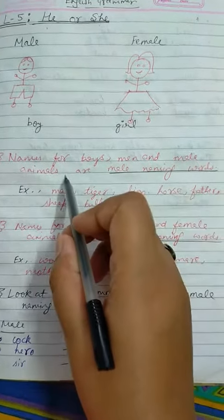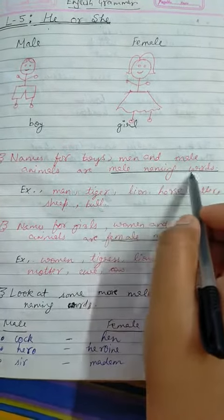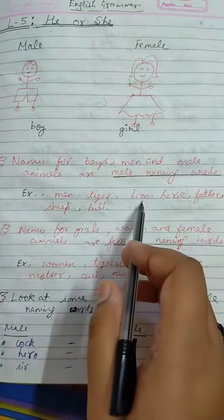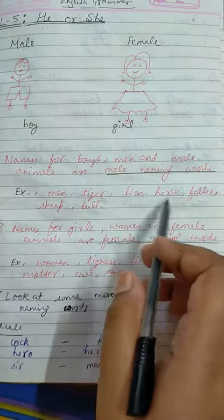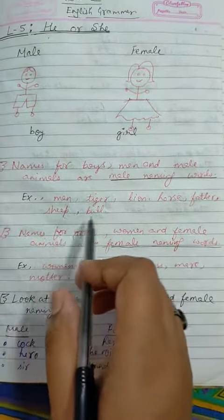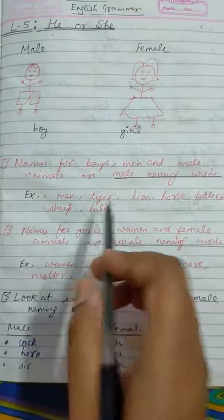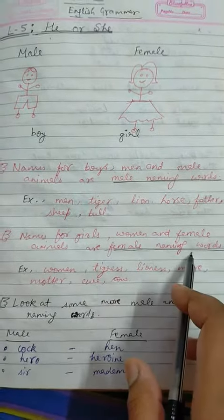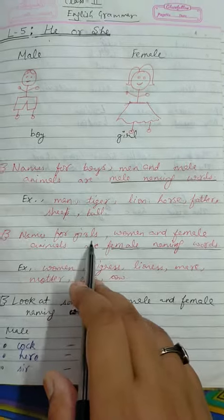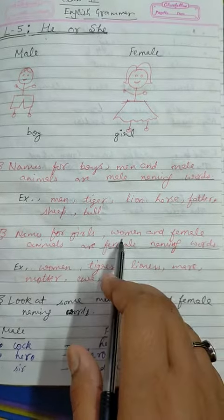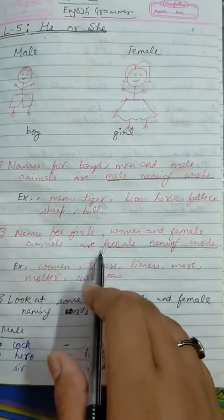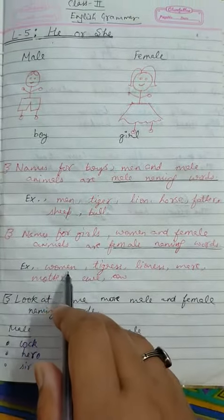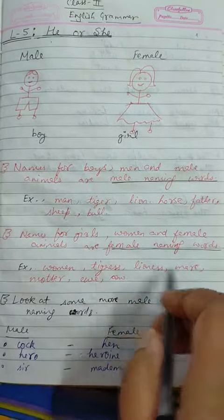Male naming words — for example: man, tiger, lion, horse, father, sheep, bull. The next topic is female naming words: names for girls, women, and female animals — for example: women, tigress, lioness.